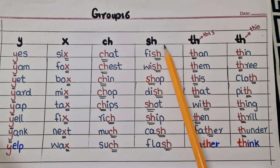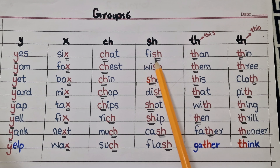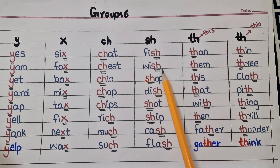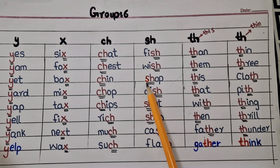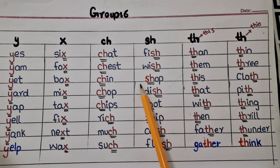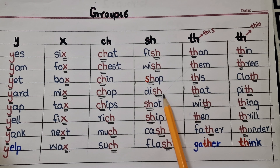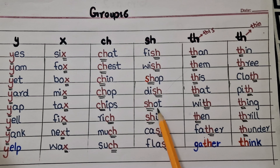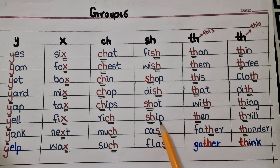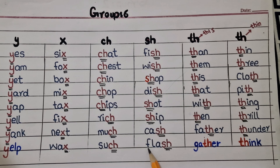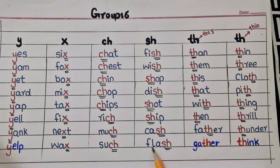Now let's learn SH sound examples. F-I-SH — Fish. W-I-SH — Wish. SH-O-P — Shop. D-I-SH — Dish. SH-O-T — Shot. SH-I-P — Ship. C-A-SH — Cash. F-L-A-SH — Flash.